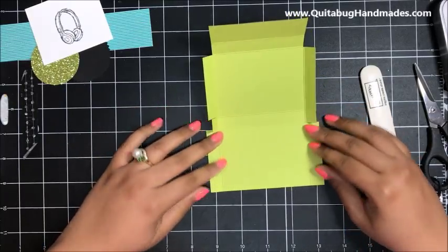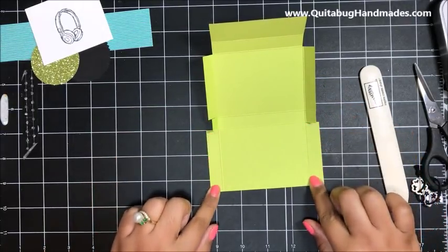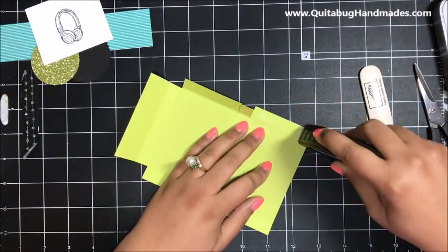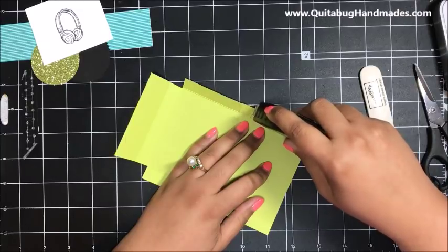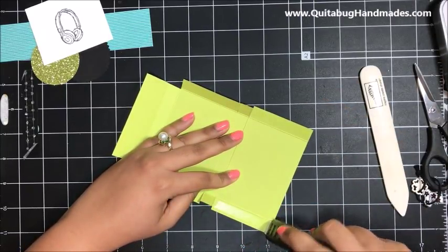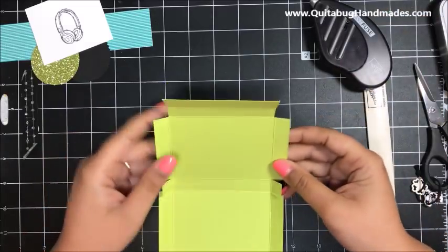What we need to do is put adhesive right here on these two flaps and fold them to the back. I am going to use my Fast Fuse. You could also use tear and tape or liquid glue. I just wouldn't recommend snail. I don't think it would be strong enough.